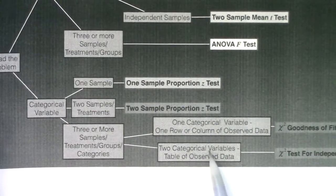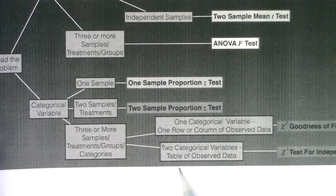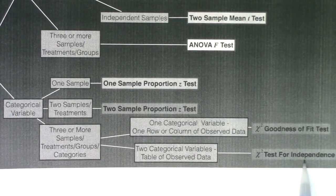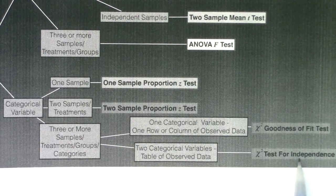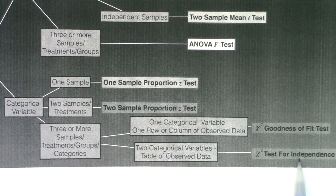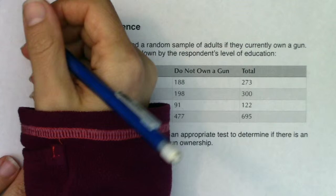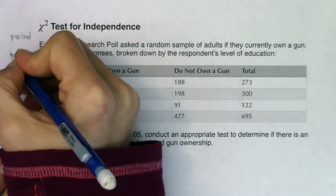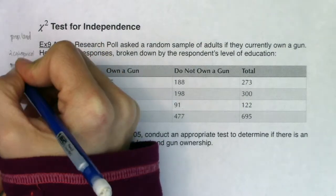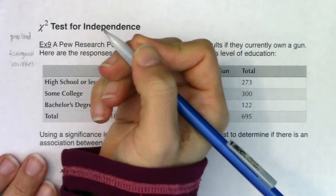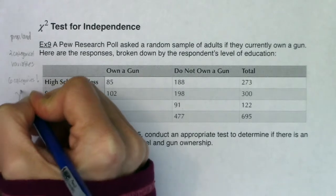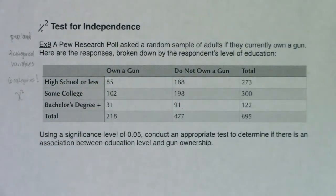We had two categorical variables and a full table of observed data — not just one row or one column. We're going to run something called a chi-squared test for independence, or you could call it a chi-squared test for association. We are in proportion land, we have two categorical variables, and we actually have six categories here. So I'm going to lead us through how we run this test and then formalize everything on the next page.